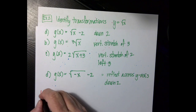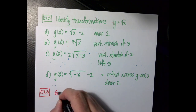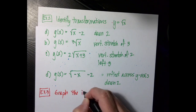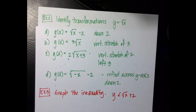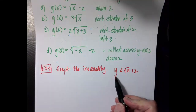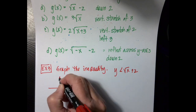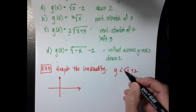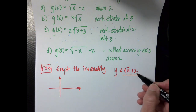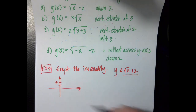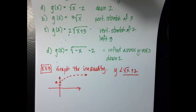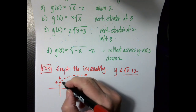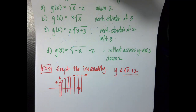Now we're going to throw in some inequalities. Example 3: graph the inequality y is less than the square root of x plus 2. If I have a y in my inequality, I'm going to shade the whole graph. I draw my coordinate axis; the square root of x plus 2 is the square root function shifted up 2. There's no equal sign, so my line is dashed. Then I shade everything below the graph.